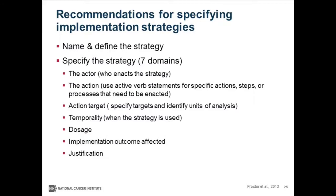Proctor and colleagues in their 2015 paper called for better specification of implementation strategies as used in research. Recommendations include naming and defining your strategy in your particular research context. They also encourage researchers to specify strategies under seven domains: the actor who enacts the strategy; the action using specific verbs like to engage, assess, or develop; the action target and units of analysis; temporality — when the strategy is used; dosage — how frequently; the implementation outcome being targeted; and a justification for why the specific strategies were selected, informed by context, theory, evidence, and stakeholder participation.